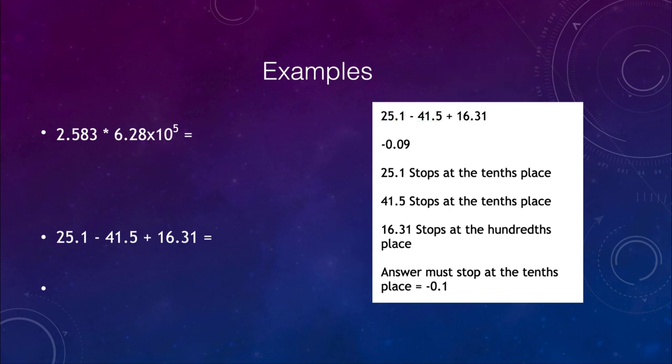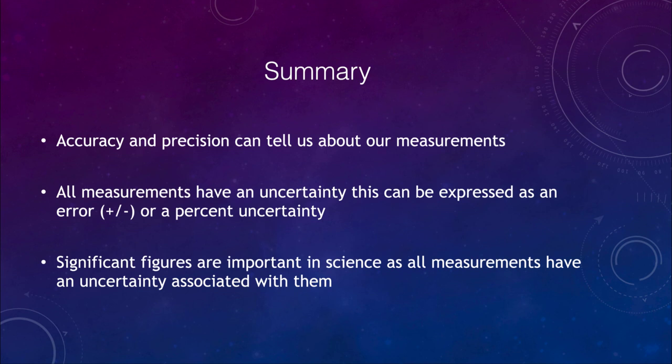In summary, we talked about accuracy and precision, which tell us something about our measurements. We discussed measurement uncertainty, which can be expressed as a plus-or-minus error or as a percent uncertainty. Finally, we looked at significant figures and went over examples — these are important because all measurements have uncertainty associated with them. That concludes this lecture on accuracy, precision, and significant figures. We'll be back for another topic in physical science. Have a great day, everyone.